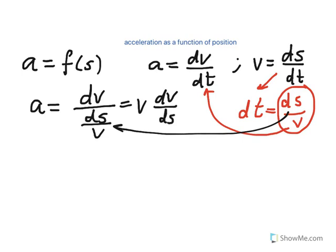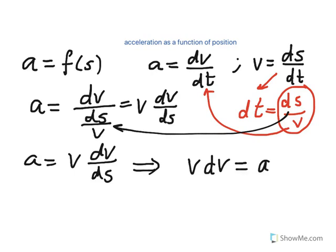Then when you clean this up or simplify it, it becomes v dv over ds, so now acceleration is equal to v dv over ds. Therefore if you cross multiply you get v dv equals a ds, and that's exactly what you want. Now you could go ahead and integrate. Now you see your acceleration here is next to ds, and if acceleration is a function of position then you can integrate.